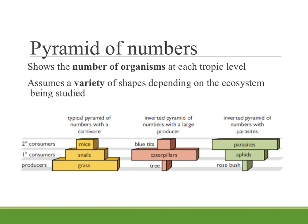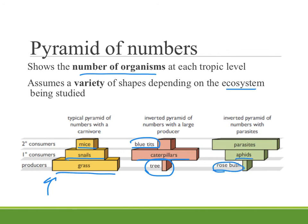Finally, a pyramid of numbers shows the number of organisms at each trophic level, and these can have a variety of shapes depending upon the ecosystem being studied. In a typical prairie grassland scenario, we've got a normally shaped pyramid with a wide base of grass producers, moving up to herbivore snails, and then to a carnivore of mice. But if we have a pyramid based on what's on a tree, you have one large producer feeding a number of caterpillars that then would be eaten by a bird — a blue tit. With a parasite scenario — one rose bush, with aphids feeding on it, and parasites on the aphids — the numbers favor the parasite compared to the rose bush.